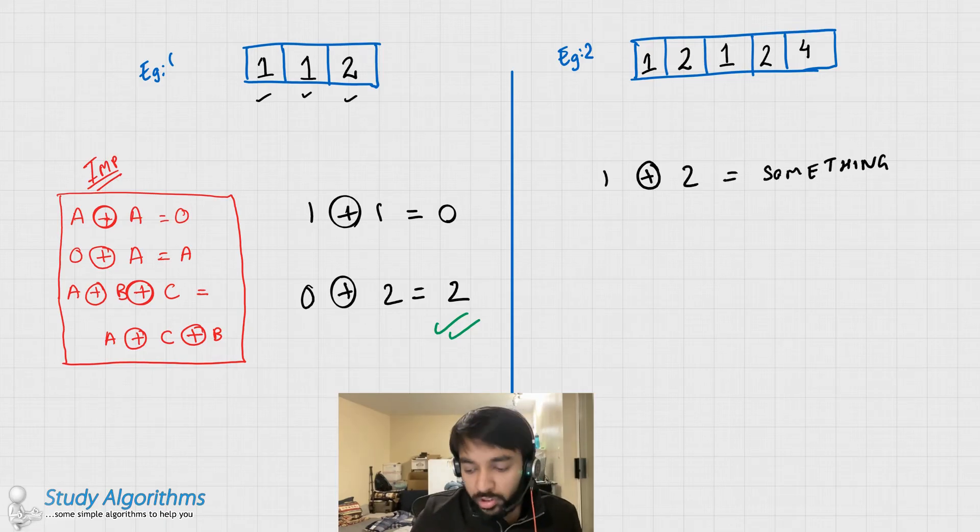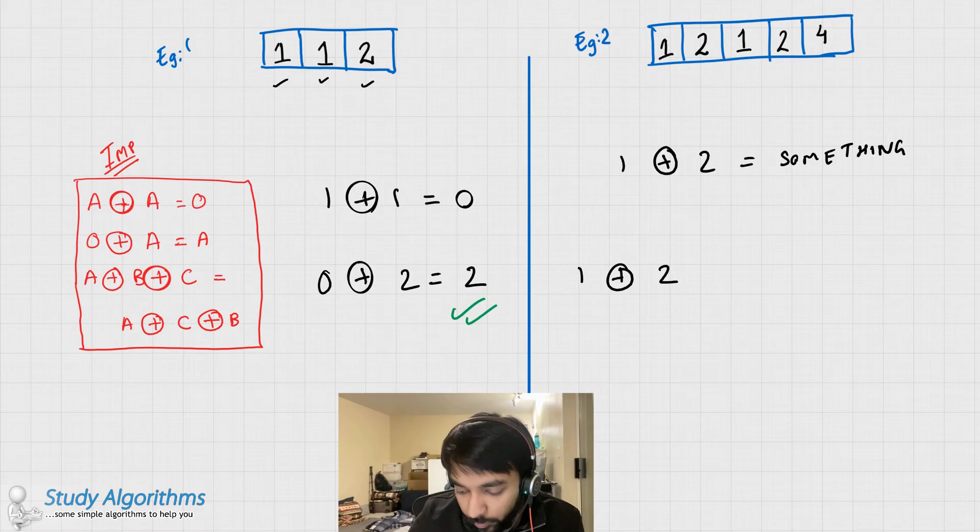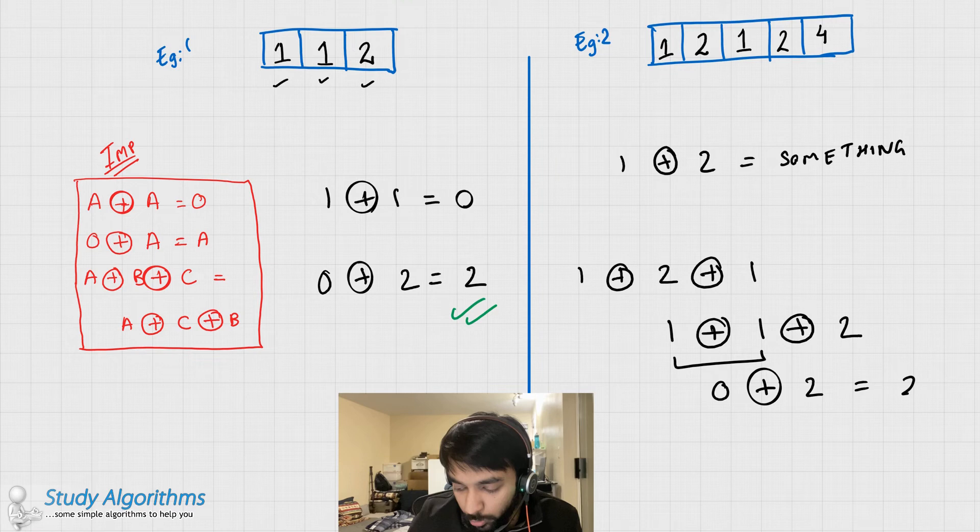Now you don't have to worry about what this something is. Because when you go forward, you get 1 XOR 2 XOR 1 again. And as per the commutative law, this can translate back to 1 XOR 1 XOR 2. Now this translates to 0. So 0 XOR 2 would translate to 2.